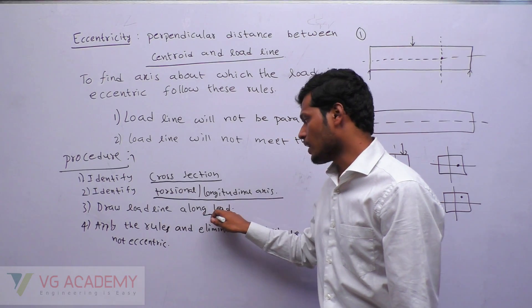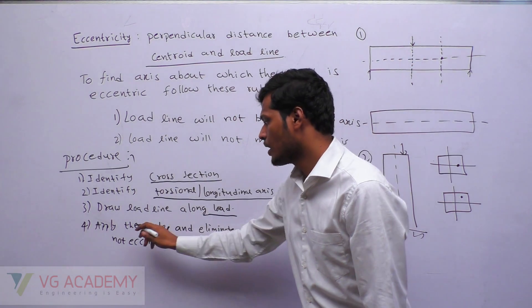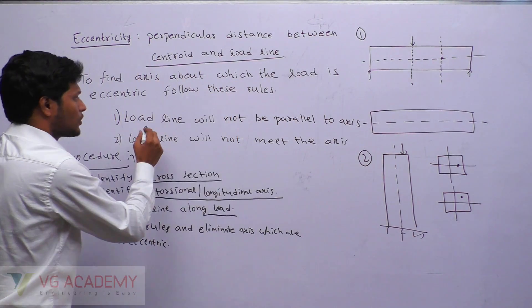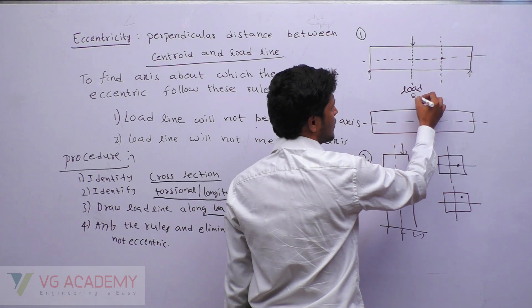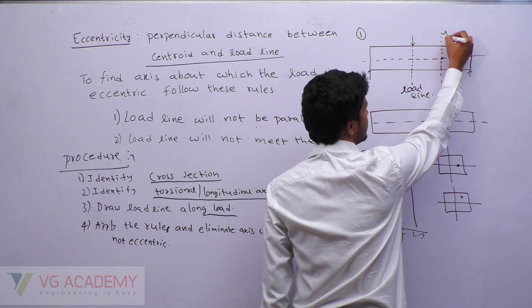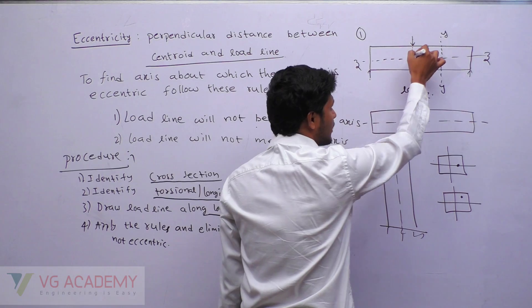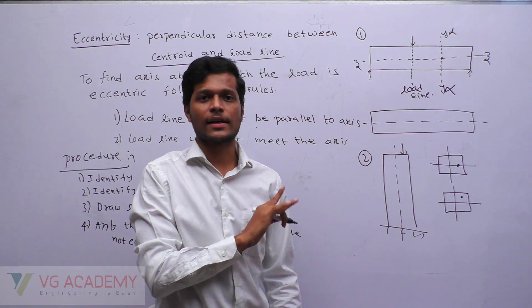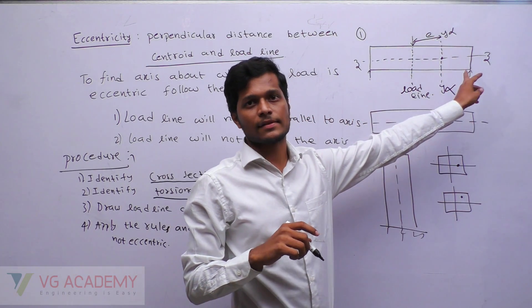Next, draw the load line along the load. Now apply the rules and eliminate the axis about which it is not eccentric. Rule one: the load line will not be parallel to the eccentric axis. Here I have axis XX — the load line is parallel to it, so I can eliminate this axis. About this axis it is not eccentric.